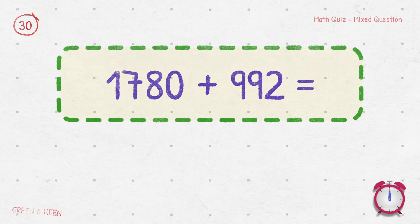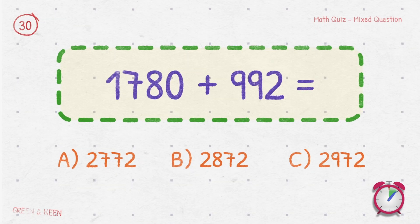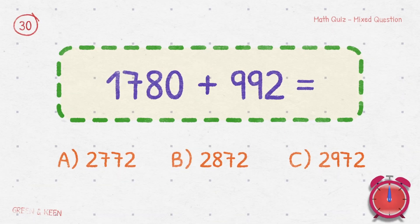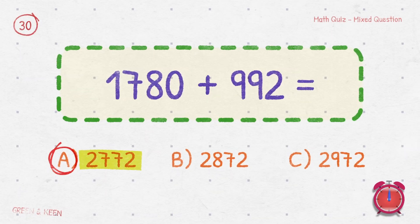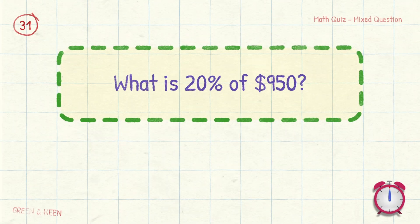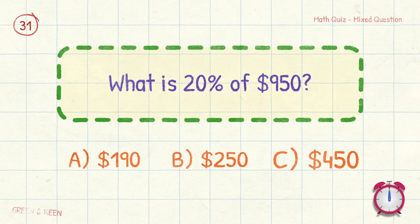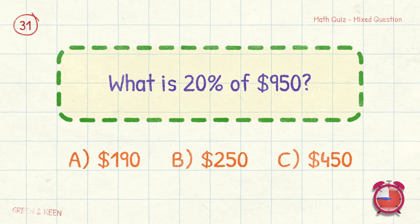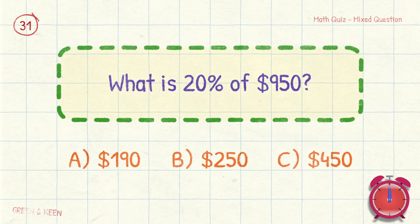1,780 plus 992 equals? 2,772. What is 20% of $950? $190.